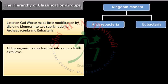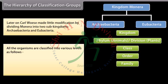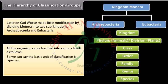All organisms are classified into various levels: Kingdom, Phylum (for animals) or Division (for plants), Class, Order, Family, Genus, and Species. The basic unit of classification is Species. We are now going to discuss the important characters of the five kingdoms.